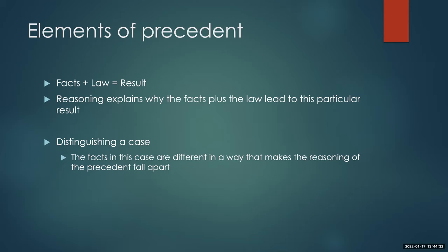Sometimes, however, you are going to look at a precedent and say, we can distinguish this situation from that situation. For example, one of the regulations that tends to come up a lot in abortion cases is something called spousal notification — this idea that if a woman wants to get an abortion, she has to notify her husband that she is pregnant and that she's planning to terminate her pregnancy, and he has to consent.